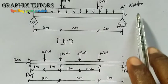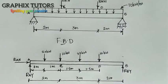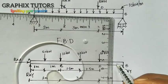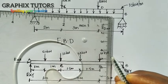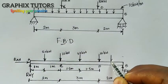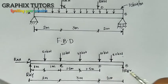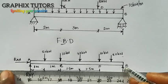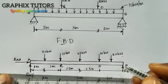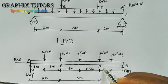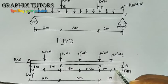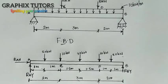The next section follows the same procedure — 10 times the distance, acting at the center. That will also be 20 kN, acting at the center of this 2-meter section, so 1 meter on each side. So this is what we have when we convert the entire UDL into point loads for all sections of the beam.